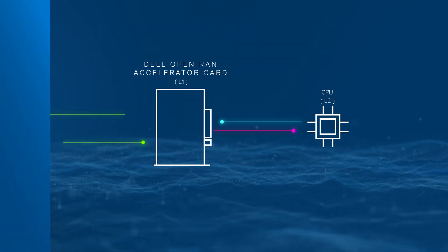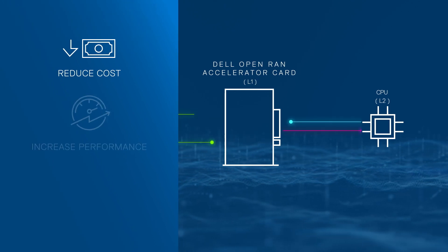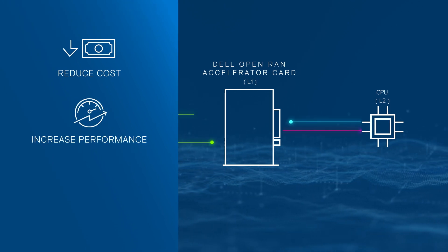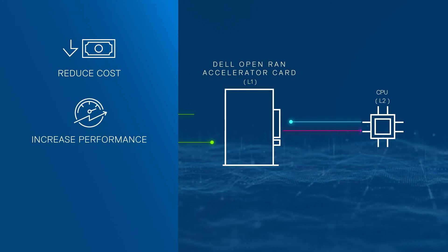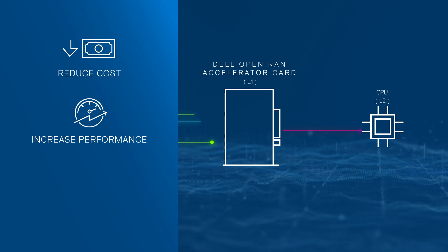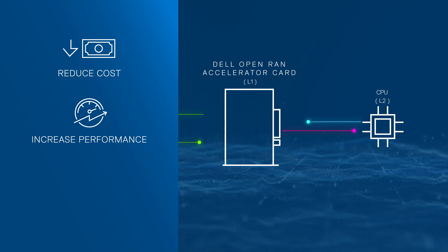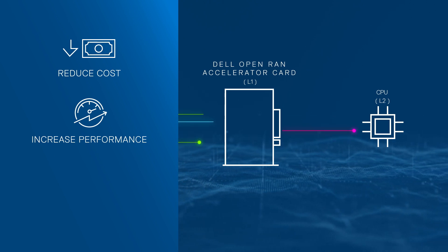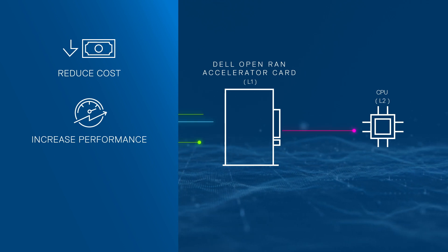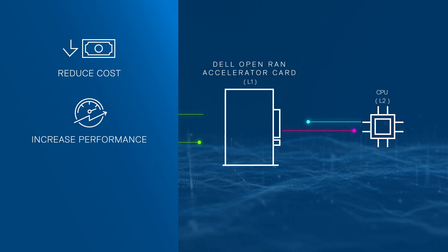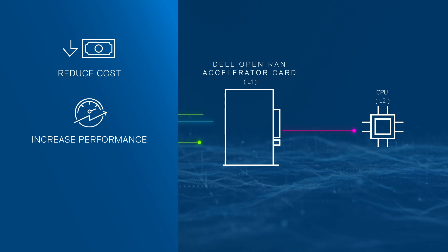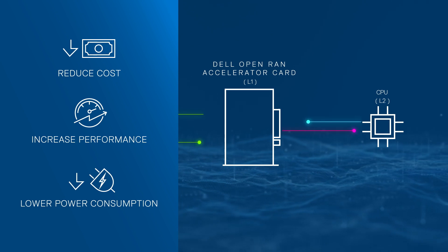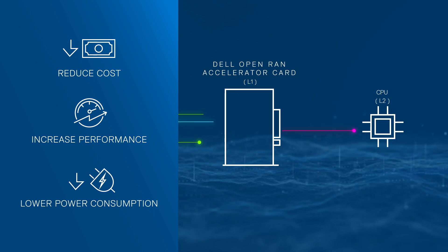It helps reduce the cost of Open RAN with the performance required to support today's 5G RAN solutions, while decreasing dependencies on the server CPU, freeing the server CPU to focus on layers 2 and 3. More efficient use of CPU resources also means lower overall power consumption across the entire RAN.